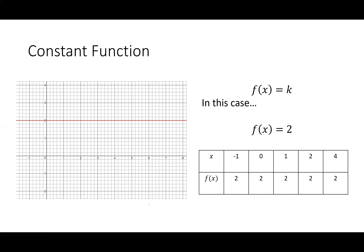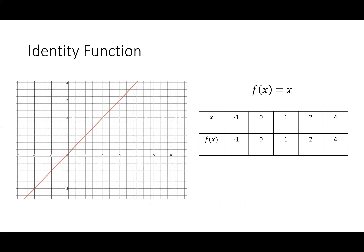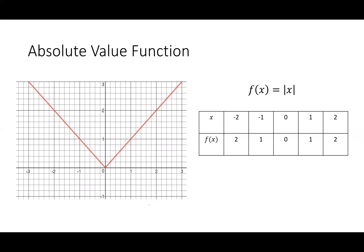We've got the constant function — if f(x) = 2, it's just a horizontal line at 2, with all output values equal to 2 no matter the input. Then the identity function, which comes in handy when we talk about inverse functions in 1.6: whatever you give as input, the output copies that exact value. Then the absolute value function — absolute value takes a number and converts it to its distance from zero. Negative 2 is two units from zero, negative 1 is one unit away, zero is zero away, one is one unit away, two is two units away. That's why these are always above the x-axis — distance is never negative.